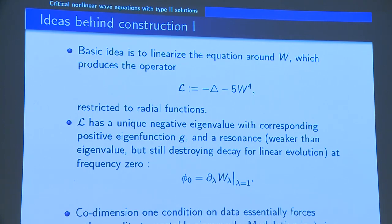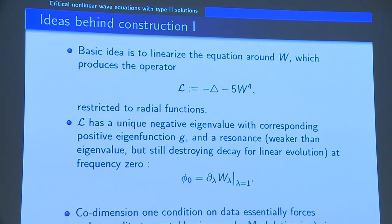If you just think in terms of the linear approximation of this equation, then because of this negative eigenvalue, you get exponential growth at infinity. So if you just look at the linear equation U_{tt} = LU, you are naturally led to impose a co-dimension one condition to prevent the solution from blowing up exponentially at infinity.